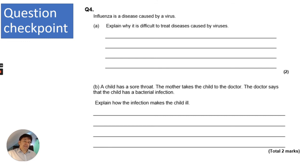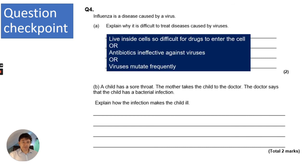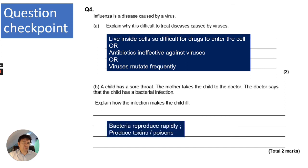Influenza is caused by a virus. It's difficult to treat diseases caused by viruses because they replicate inside cells, making drugs like antibiotics ineffective, and also because viruses mutate frequently. For the bacterial infection part, bacteria make a child ill by producing toxins or poisons, and because they rapidly reproduce.